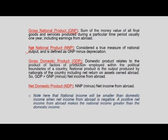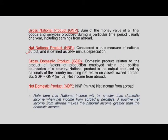Domestic product relates to the output of factors of production employed within the political boundaries of a country — what is produced within the domestic territory. National product, on the other hand, is the output produced by nationals of the country including net return on assets owned abroad. Therefore, GDP equals GNP minus net income from abroad. Net income from abroad is the balance after deducting earnings of foreign investment in domestic territory from the nation's investment earnings abroad. National income will be smaller than domestic income when net income from abroad is negative, and greater when it is positive.